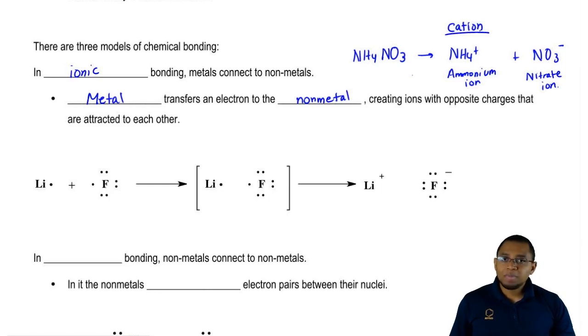The nonmetal would be gaining that electron that was transferred over to it. When you gain an electron, you become more negative. A negative ion, remember, is called an anion. Their opposite charges is what attracts them to one another. Remember in chemistry, opposites attract.